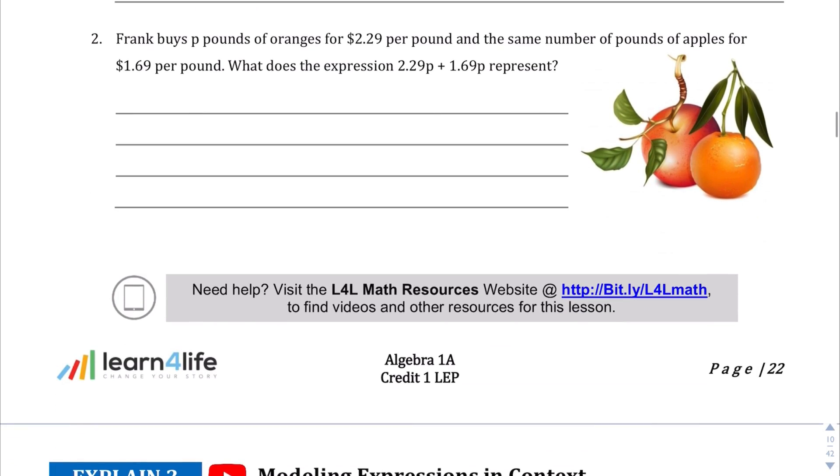Question number 2, Frank buys P pounds of oranges for $2.29 per pound, and the same number of pounds for apples for $1.69 per pound. So what does the expression 2.29P plus 1.69P represent? Well, the big difference between the last question and this one is that we're using the same variable. We're just using P to stand for pound. So I know we have, it looks like two different fruits here, but we're only using the variable P for the pounds of the fruit. So the expression 2.29P plus 1.69P represents the total cost for the number of pounds of oranges and apples you're buying.